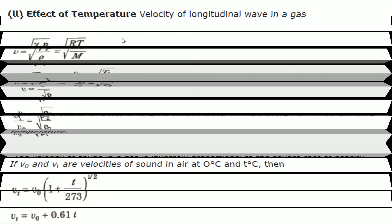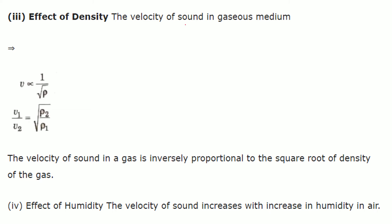The effect of density: velocity of sound in a gaseous medium is inversely proportional to the square root of density, so V1/V2 = √(ρ2/ρ1). For the effect of humidity: the velocity of sound increases with an increase in humidity.